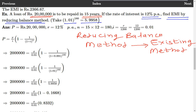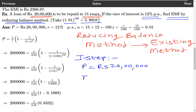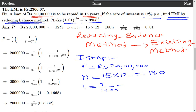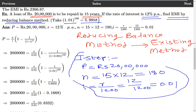First step: write down the given data. Loan amount is Rs. 20,00,000. Number of years is 15. N is number of months, so we multiply by 12: 15 into 12 is 180. And I is equal to R upon 1200, that equals to 12 upon 1200, which equals to 0.01.